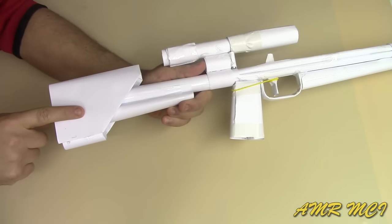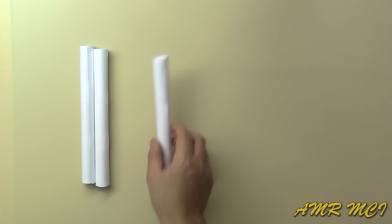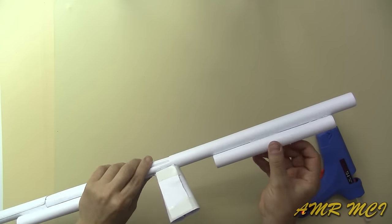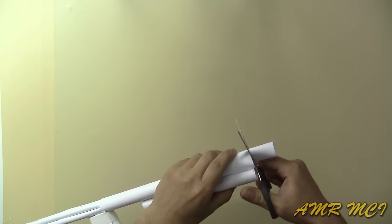Now let's start making the stock by taking a piece of roll and gluing it back at the bottom. Then cut the excess piece of roll and keep it for now.